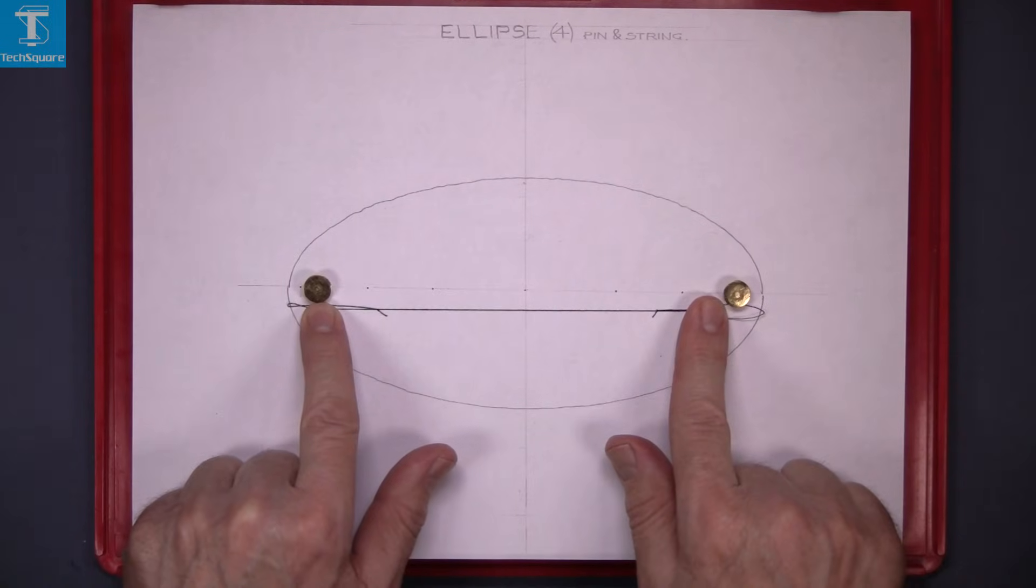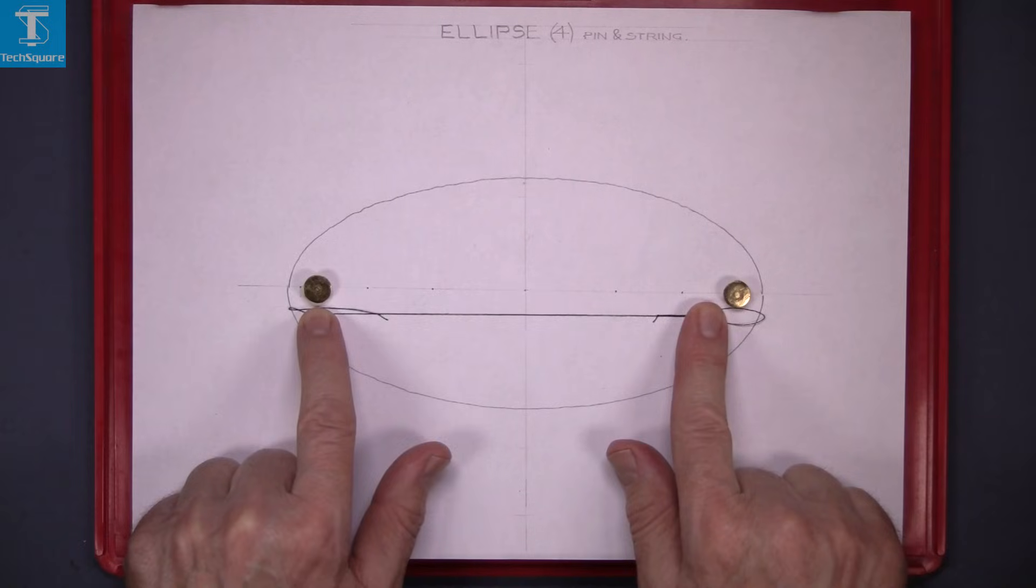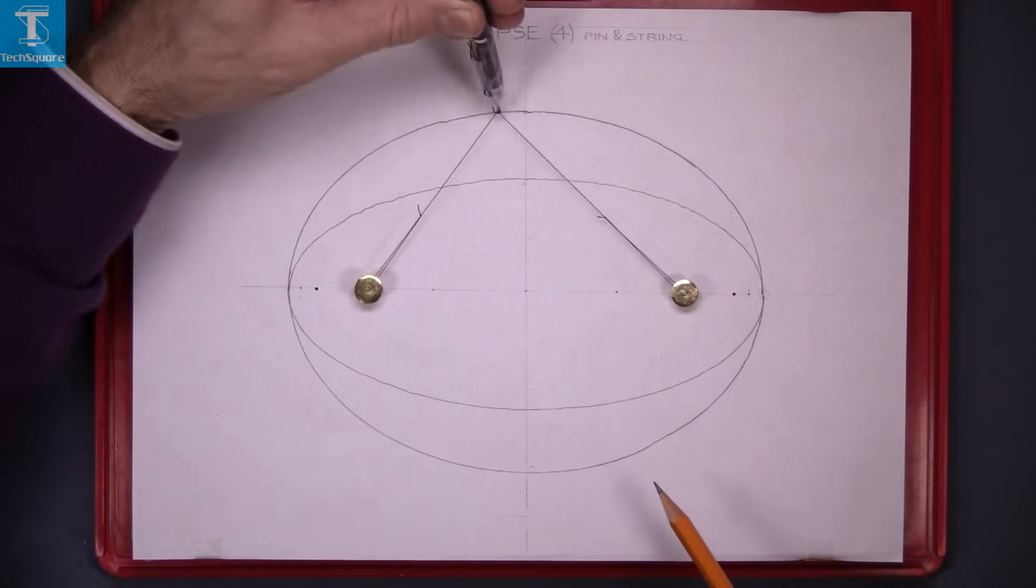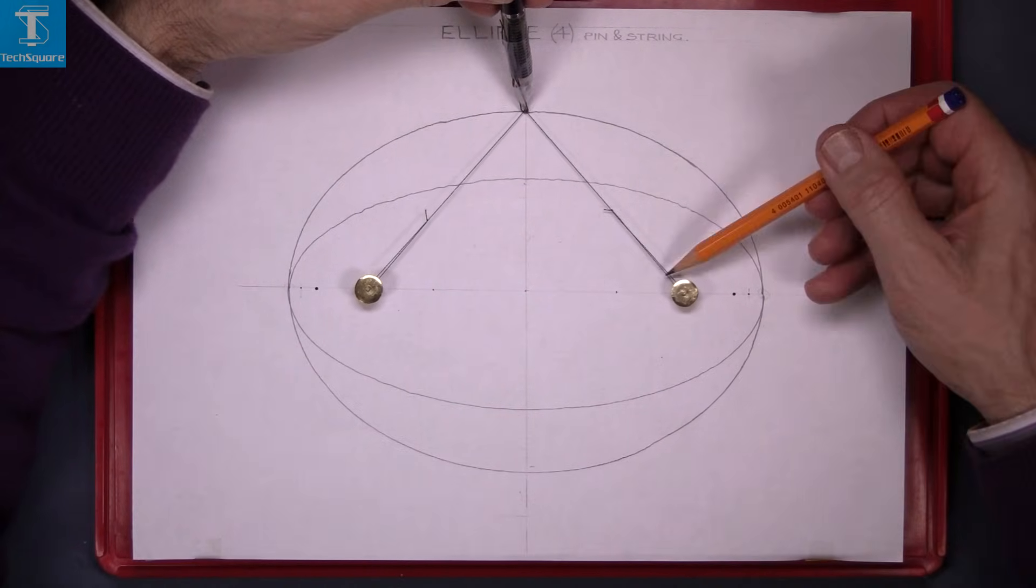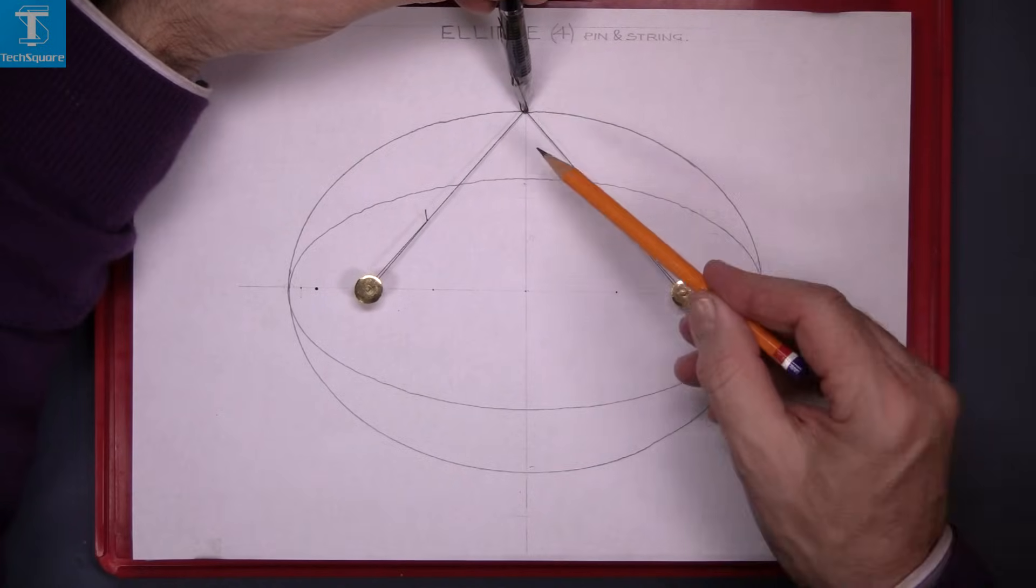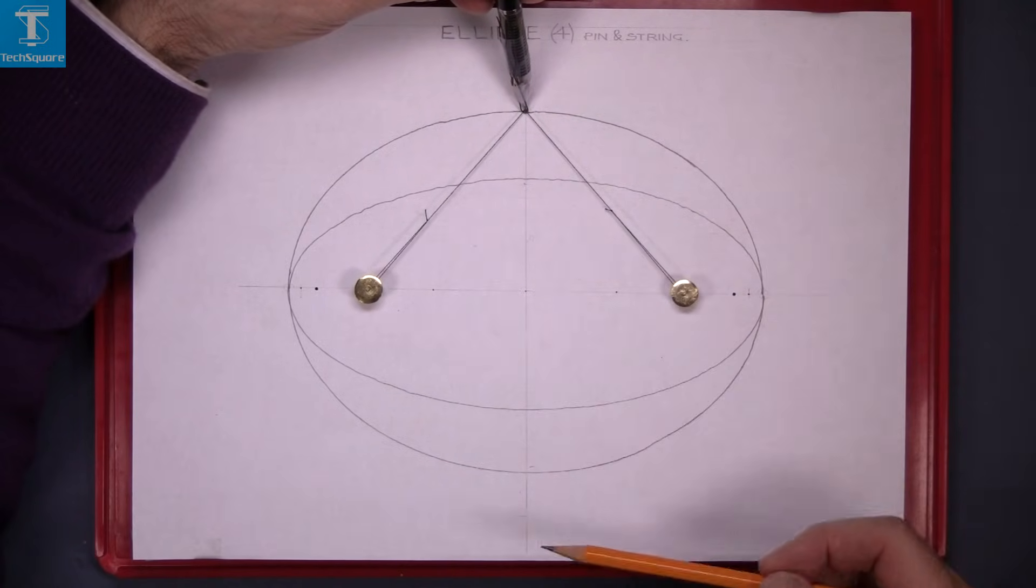Now this is the string when it's stretched out - it's exactly the length of the major axis. When I bring it up to the top here, this is half of the major axis and this is half of the major axis.